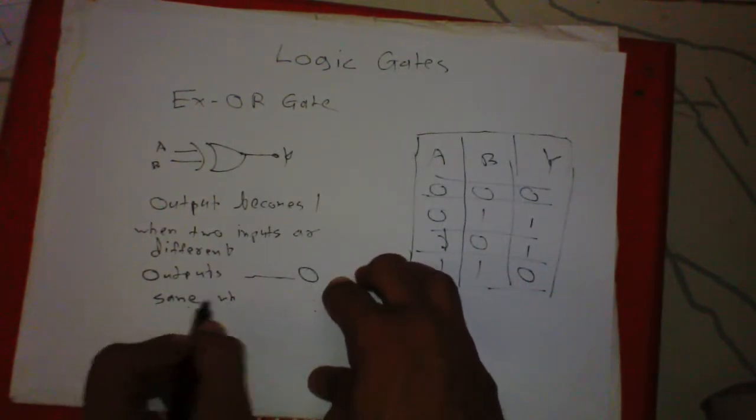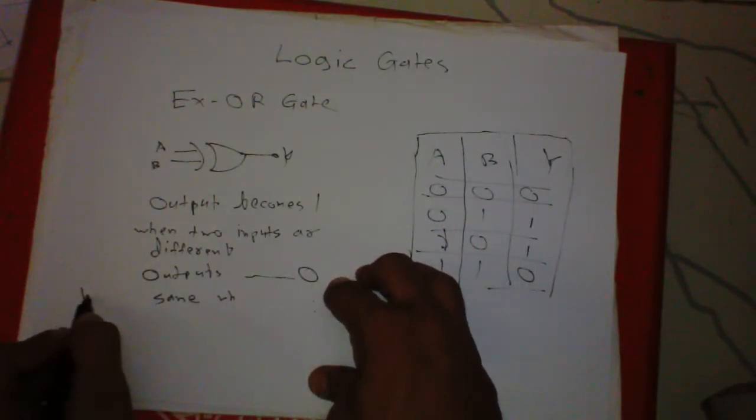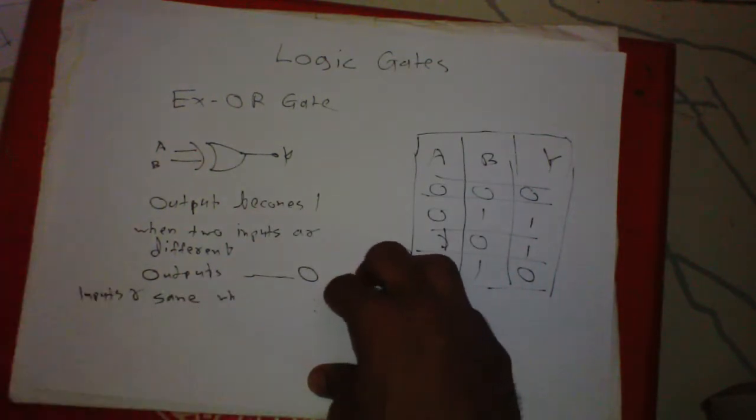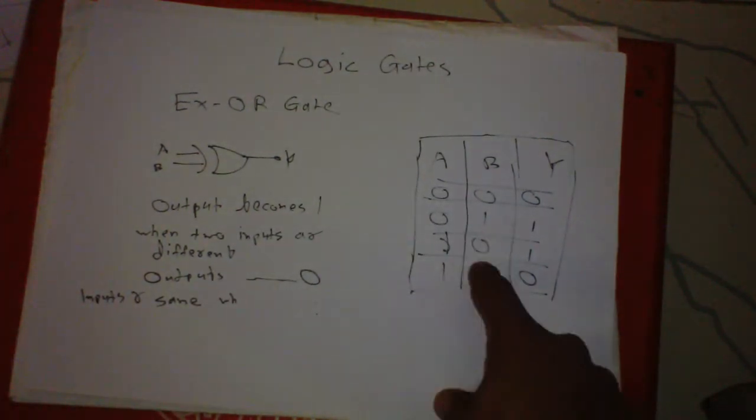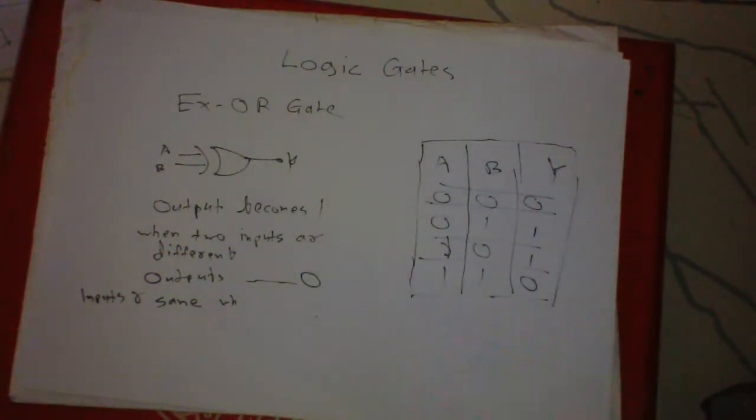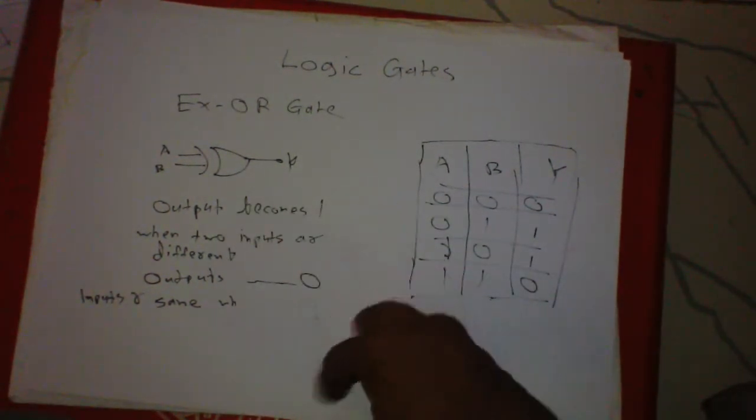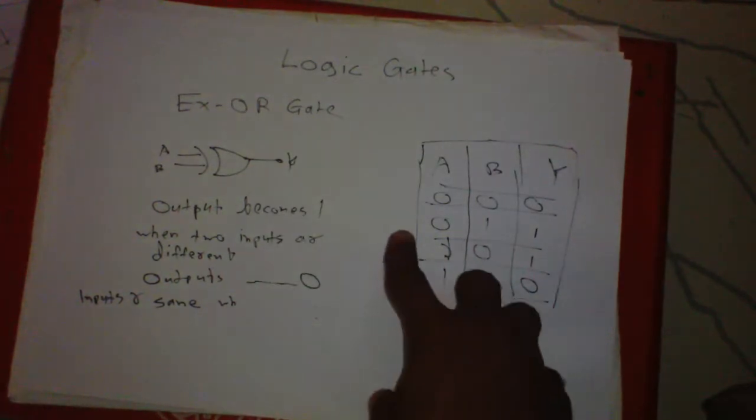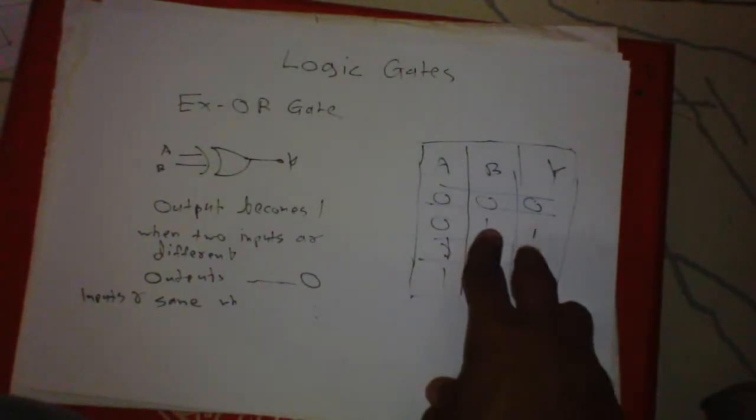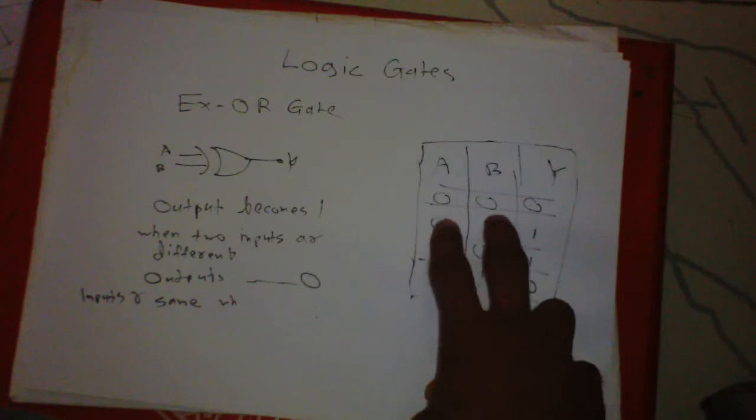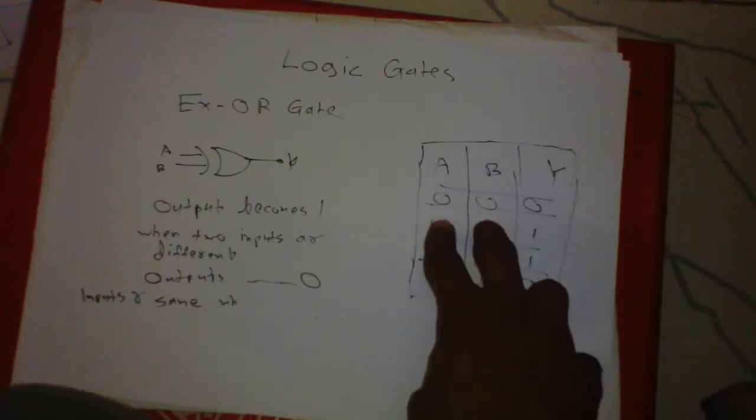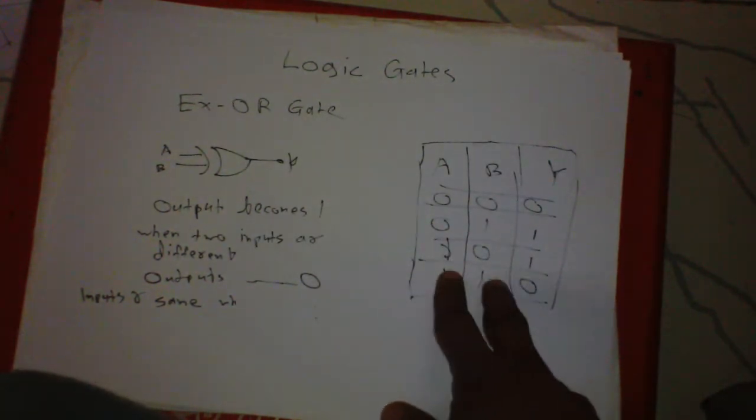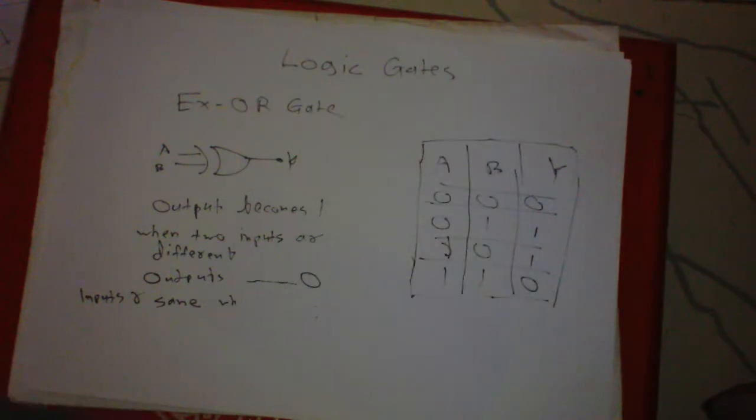Output becomes zero when two inputs are same. I hope you understand the logic of XOR gate. From XOR gate you will learn the logic of XNOR gate. I repeat: here output becomes one when two inputs are different, and output becomes zero when two inputs are same. Thank you for watching.